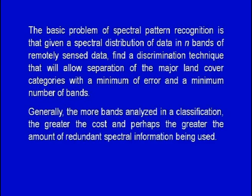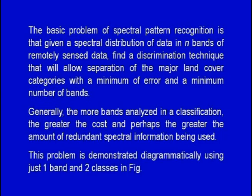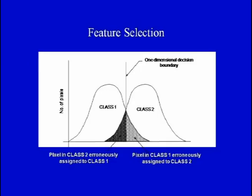Generally, the more bands analyzed in a classification, the greater the cost and perhaps the greater the amount of redundant spectral information used. This problem is demonstrated diagrammatically using just two bands of data and two classes, where we find that the distribution of two classes shows an overlap between them.